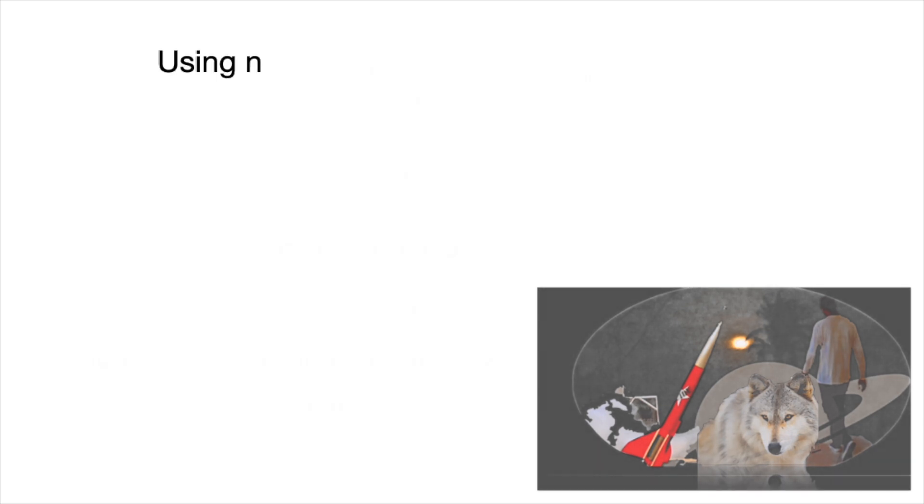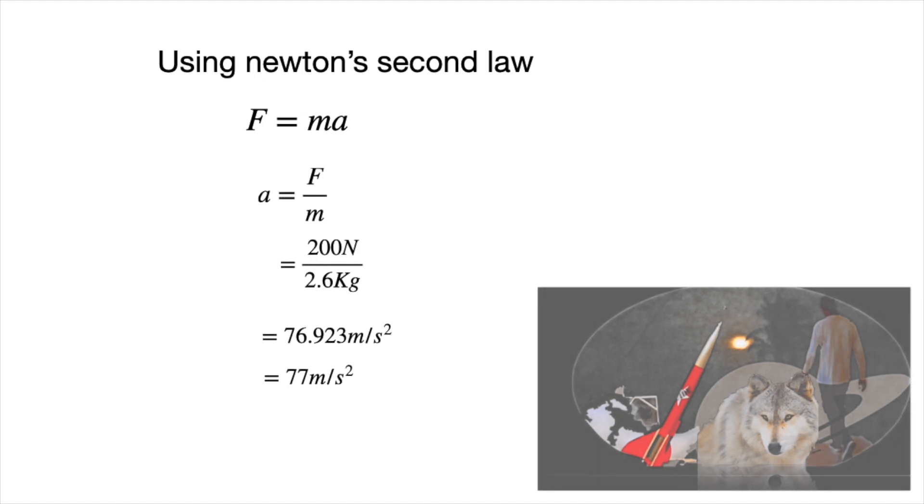Now using Newton's second law of motion, F equals MA, A equals F over M gives me 200 over 2.6. I got 76.923 meters per second squared, which is approximately 77 meters per second squared, which is the acceleration.